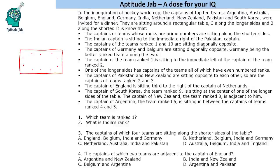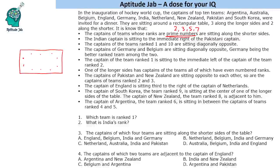Let us read the conditions. The first condition is: the captains of teams whose ranks are prime numbers are sitting along the shorter sides. Let us first mark the rankings and then we will mark the teams. The prime numbers less than 10 are 2, 3, 5, and 7. So ranks 2, 3, 5, and 7 are among the 4 people on the shorter sides, and the other 6 numbers are on the longer sides.